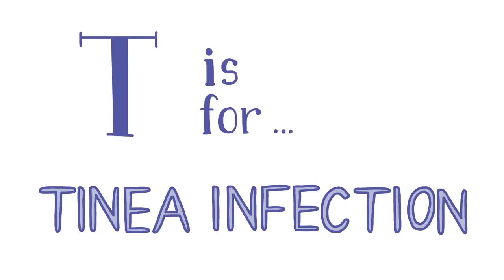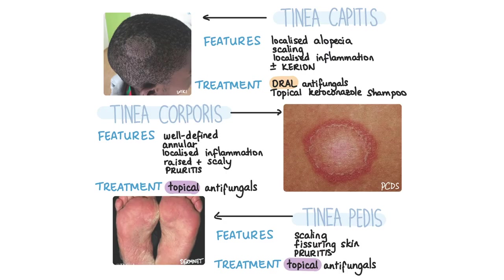T is for tinea infection, also referred to as dermatophytosis. Dermatophytes are a group of fungi that invade and grow in dead keratin. Tinea capitis is tinea infection of the scalp, most commonly seen in children. On examination you'll see an area of alopecia and scaling with signs of inflammation like erythema and pustules. If left untreated, a raised pustular spongy mass called a kerion can develop. It's hard to diagnose clinically, so scalp shavings should be sent for microscopy and culture. Once confirmed, tinea capitis is treated with oral antifungals and topical ketoconazole shampoo.